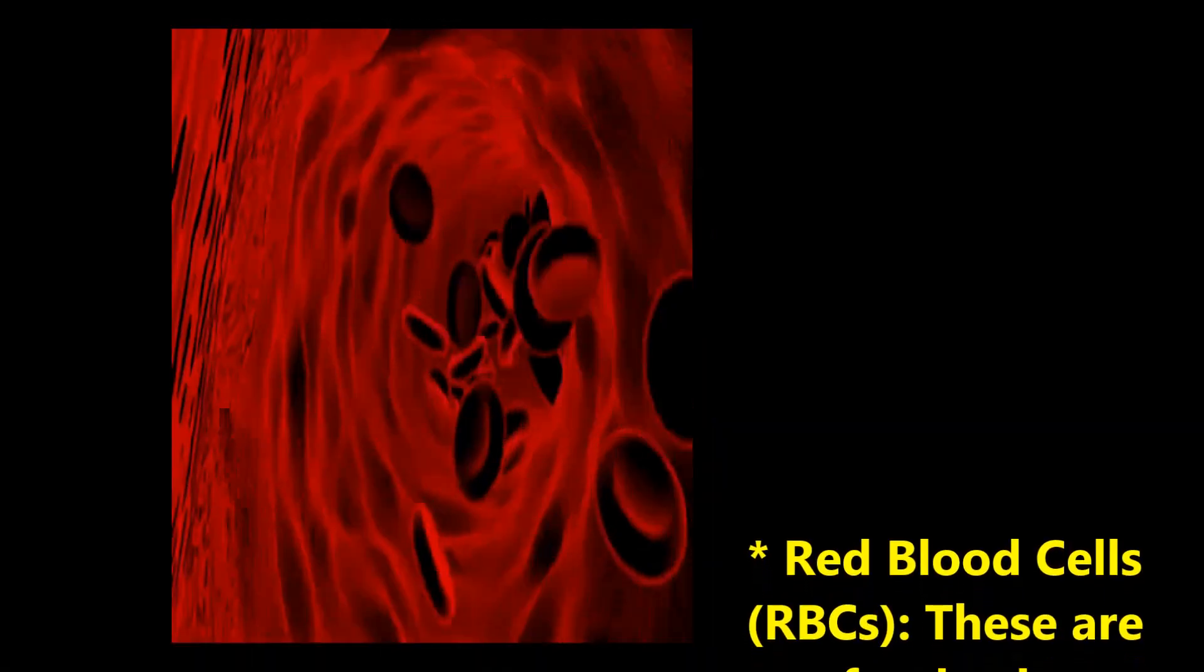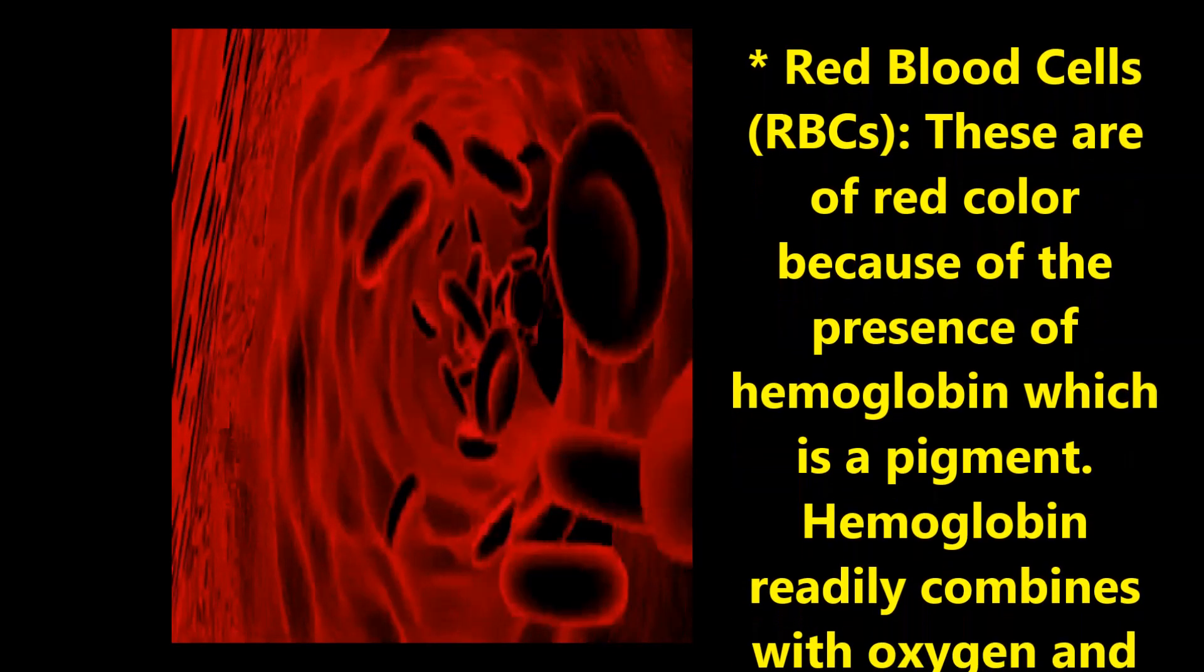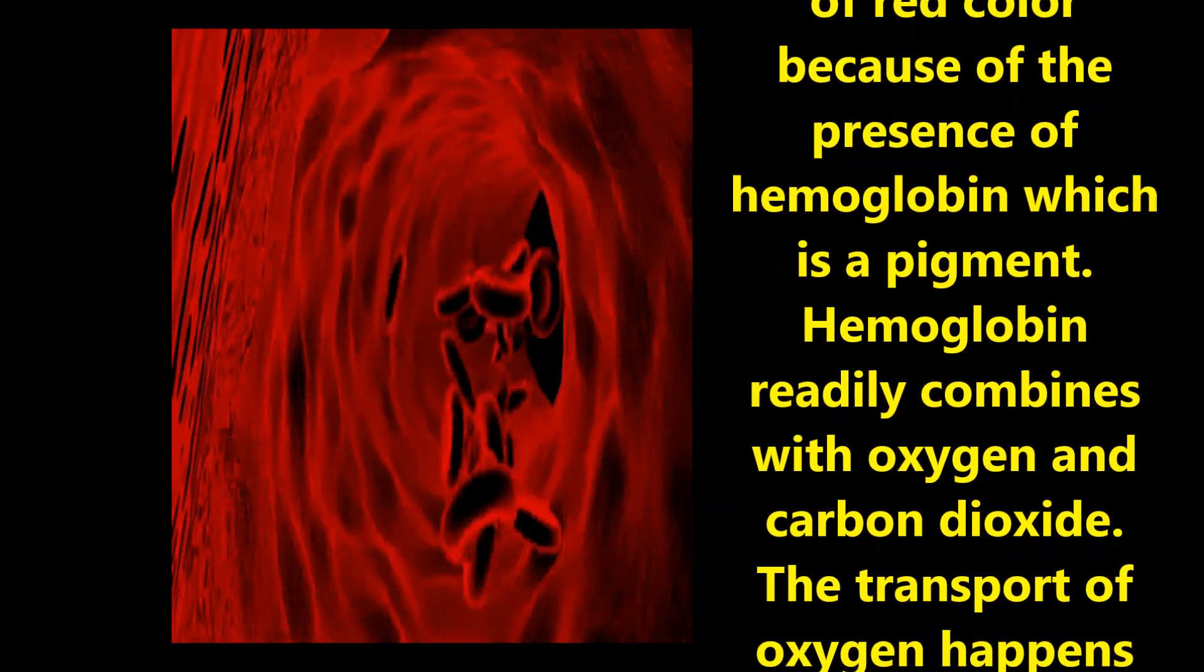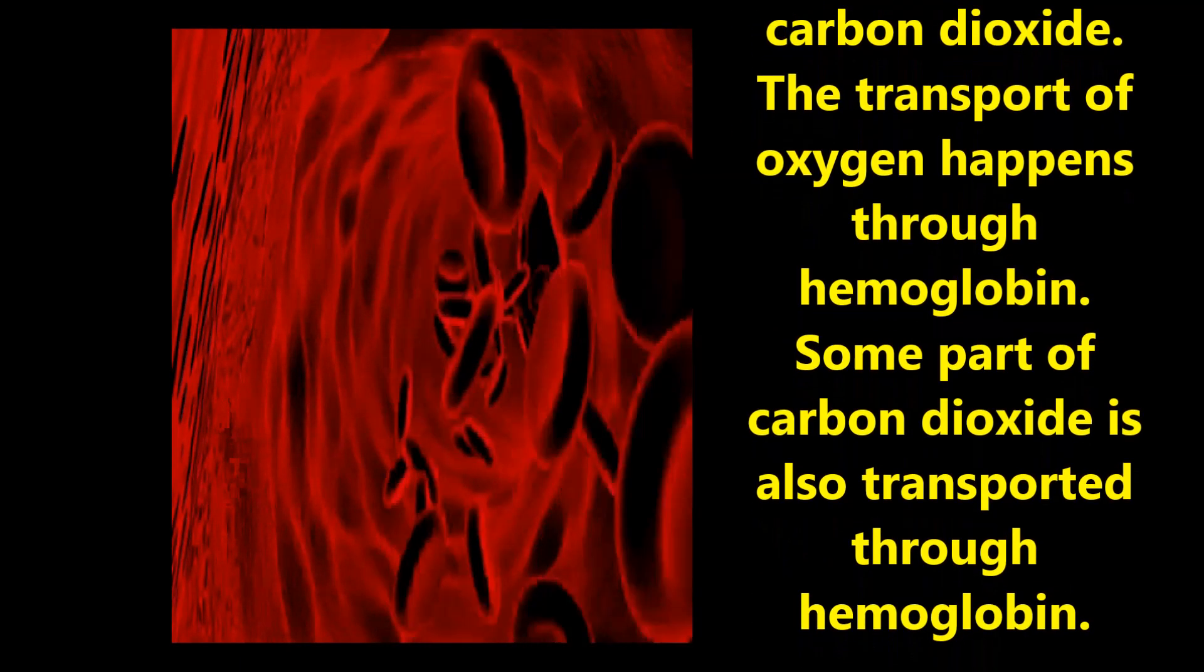Red blood cells are of red color because of the presence of hemoglobin, which is a pigment. Hemoglobin readily combines with oxygen and carbon dioxide. The transport of oxygen happens through hemoglobin.